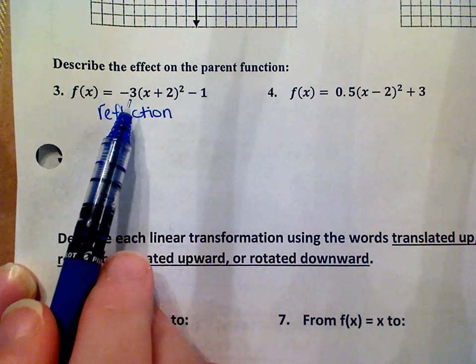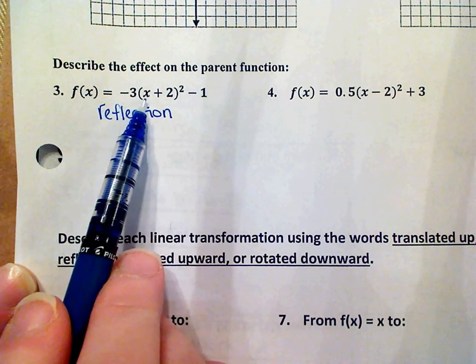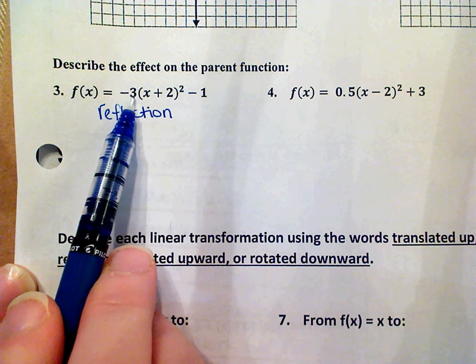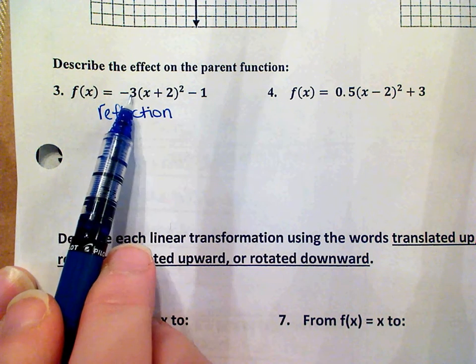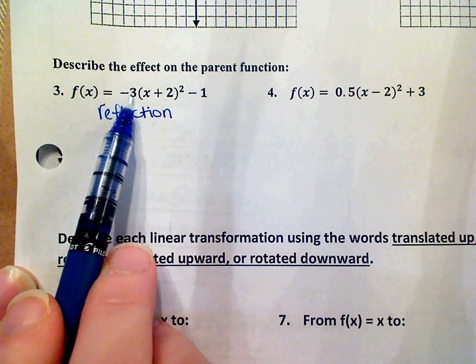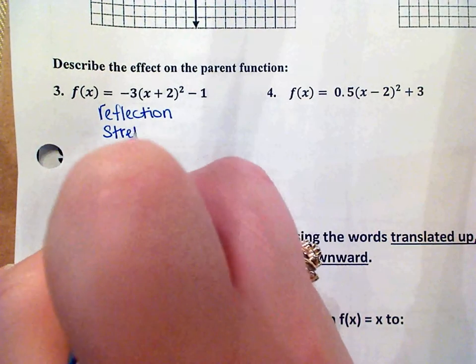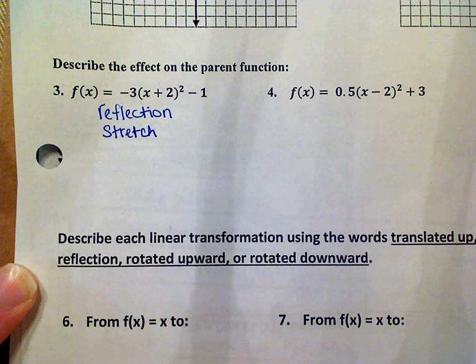The next thing I'm going to do is look and see if there's a number in front of the X that's not a one. If it's a one then this effect has not occurred. But since we have a number in front of X that's not one, it's a three, then we're either going to say a stretch or a compression has occurred. If this number is bigger than one, which three is, then we have a stretch. If it's a fraction or decimal between zero and one it would be a compression.